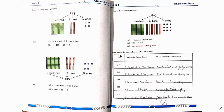Now we have hundreds, tenths, and ones columns, and in the other column the numbers name. The first one is done for you: three fifty four — three hundred, five tenths, four ones. Numbers name: three hundred and fifty four.